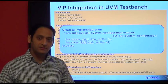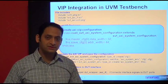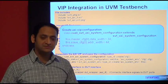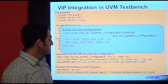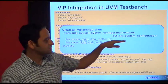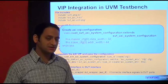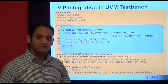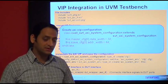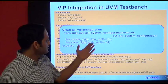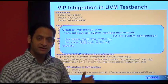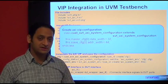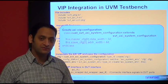Once you have completed the inclusion and import, the next step is to configure the VIP as per your DUT configuration. You extend the SVT AXI system configuration, create your own class, and within that you set different programmable configuration fields such as data width, address width, and other characteristics of the DUT which you need to match with the VIP configuration.